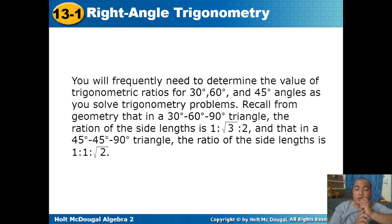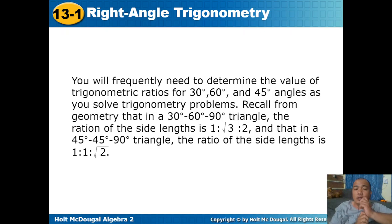You will frequently need to determine the value of trigonometric ratios for 30 degrees, 60 degrees, and 45 degrees as you solve trigonometry problems. Recall from geometry that in a 30-60-90 triangle, the ratio of side lengths is 1 to square root of 3 to 2. And in a 45-45-90 triangle, the ratio of side lengths is 1 to 1 to square root of 2. These are called the special angles: 30 degrees, 60 degrees, and 45 degrees.